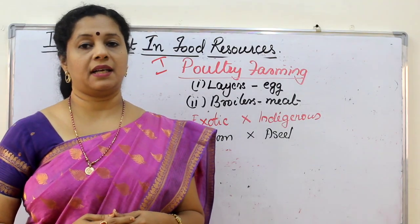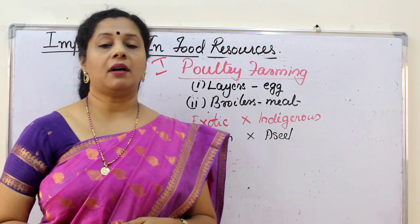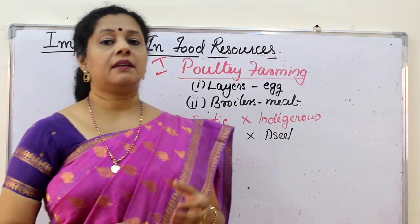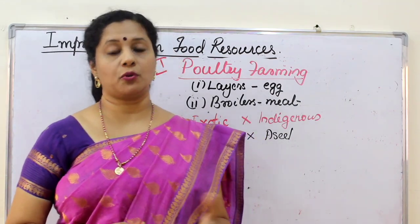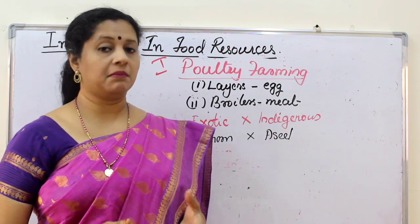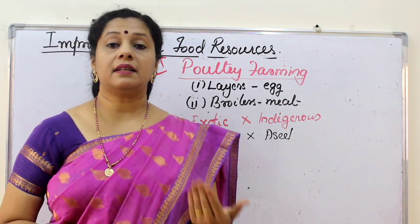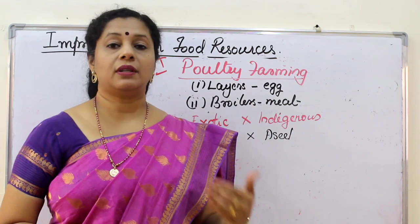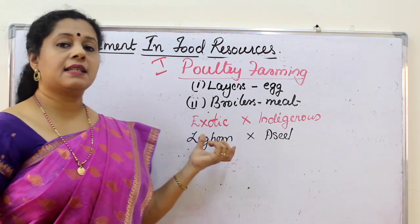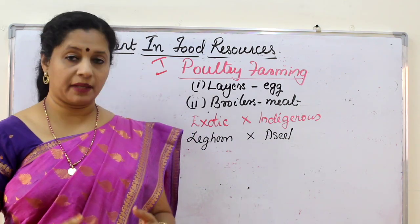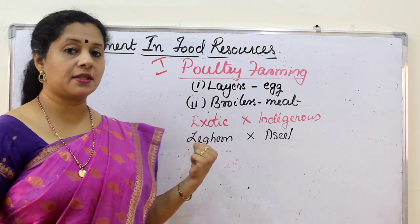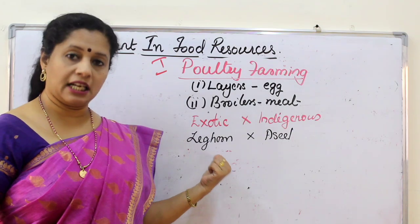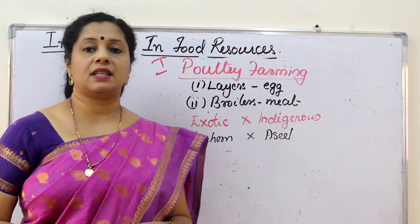The next category under animal husbandry is poultry farming, undertaken to raise domestic fowls for eggs and chicken meat. Two breeds of birds are used: layers for getting eggs and broilers for getting meat. Breeding is done between exotic species and indigenous or local varieties. An example of an exotic bird is Leghorn, and it is crossed with the indigenous variety called Aseel. When breeding these birds, we keep in mind certain desirable traits: the number and quality of chicks, and dwarf broiler parents for commercial chick production.